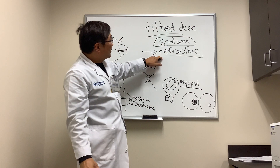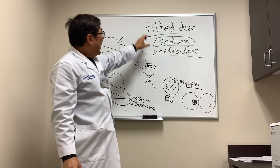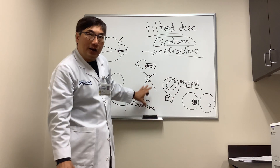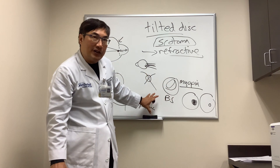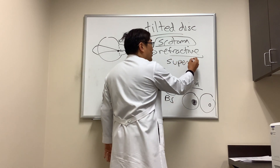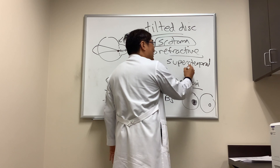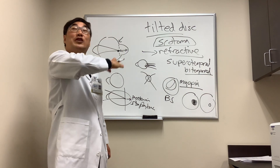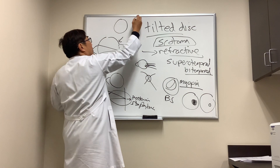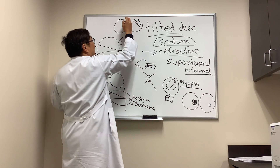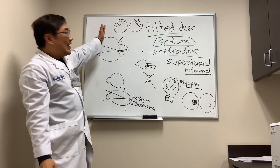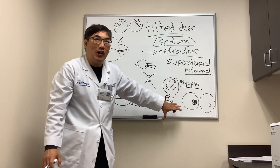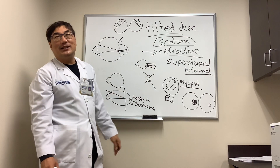A refractive scotoma can be refracted away. A tilted optic disc causes inferior nasal fiber loss from hypoplasia, or the staphyloma is inferior nasal, which means it can mimic a superior temporal field defect — and if it's both eyes, a bitemporal field defect. However, it will not respect the vertical meridian; it will drift across the vertical. So when you have a bitemporal hemianopsia that doesn't respect the vertical meridian from a tilted disc, you'll look at the inferior nasal retina for atrophy and staphyloma. That's how a tilted disc can mimic a bitemporal hemianopsia.